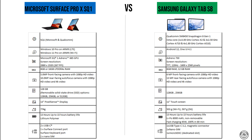As for RAM, the Microsoft Surface Pro X SQ1 comes with either 8 gigabytes or 16 gigabytes. The Samsung Galaxy Tab S8 comes with either 8 gigabytes or 12 gigabytes of RAM, depending on the chosen storage configuration.